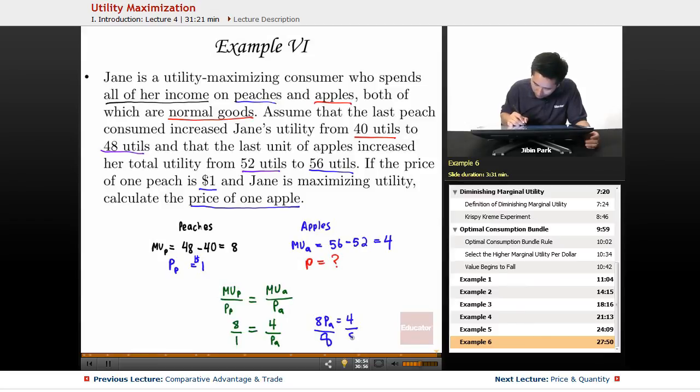What you get is the price of an apple is 1 over 2, which in this case equals 50 cents.